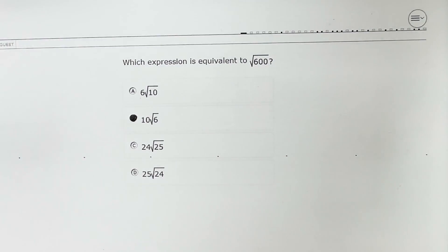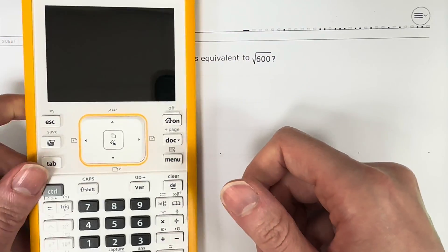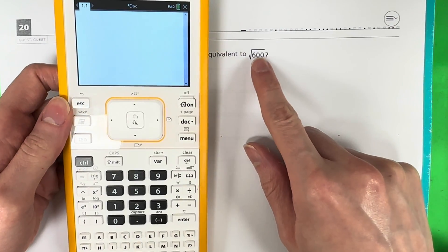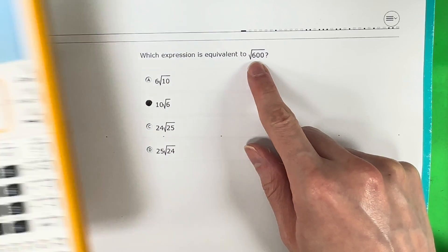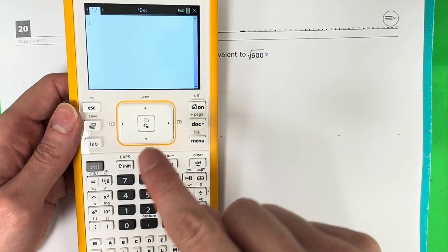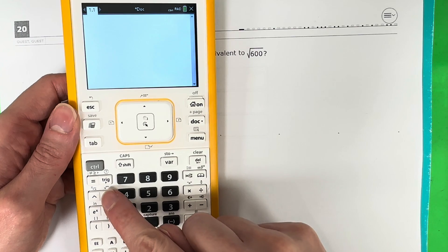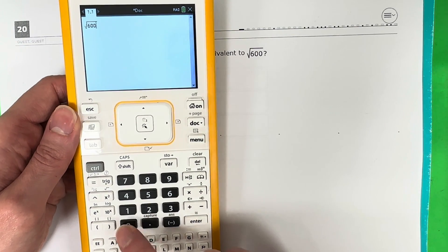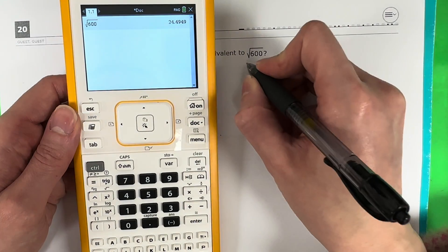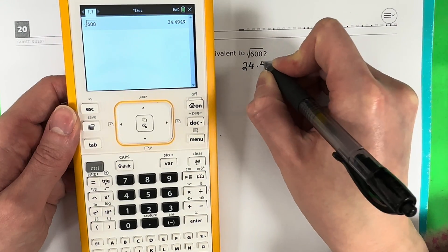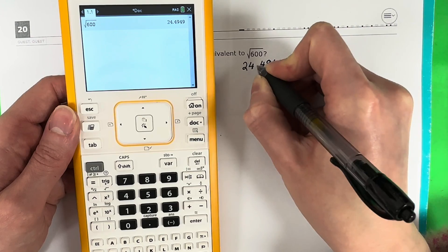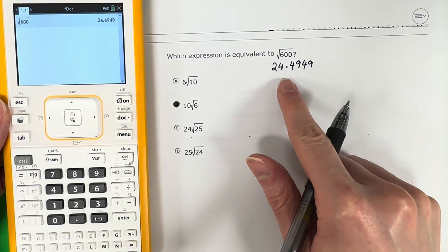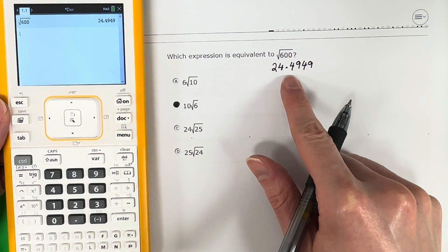An easy way to do this is just grab your calculator. I'm going to go ahead and zoom out here. So the first thing that I'm going to do is I'm going to put this number, the one from the question. Square root of 600. So how you do square root is control, and then this x squared right here. And then you're going to go ahead and put 600, and then push enter. And I'm going to write it down. 24.4949. So my goal is I'm going to put each one in the calculator, and I want to see which one will give me 24.4949.